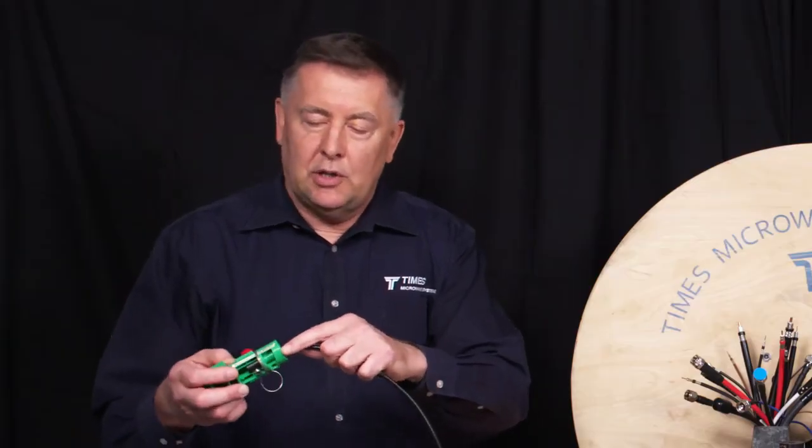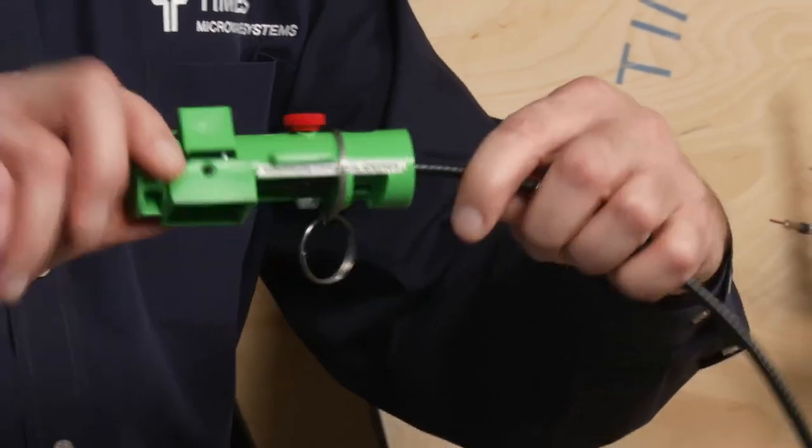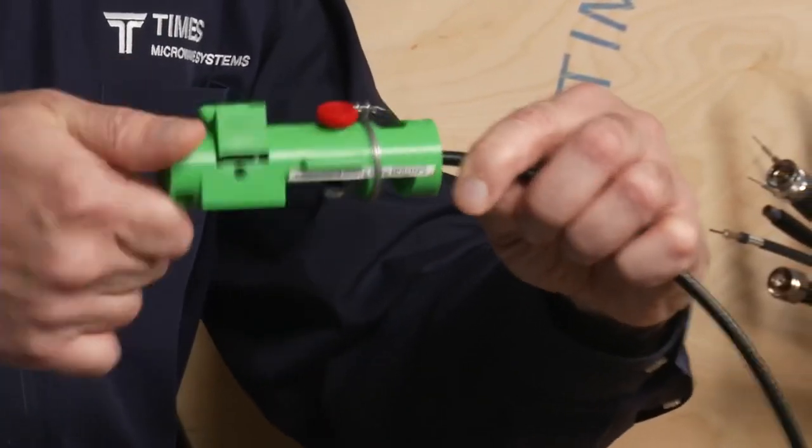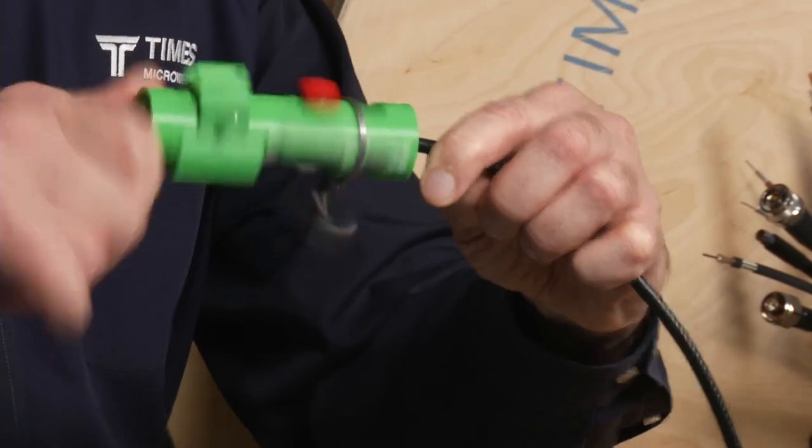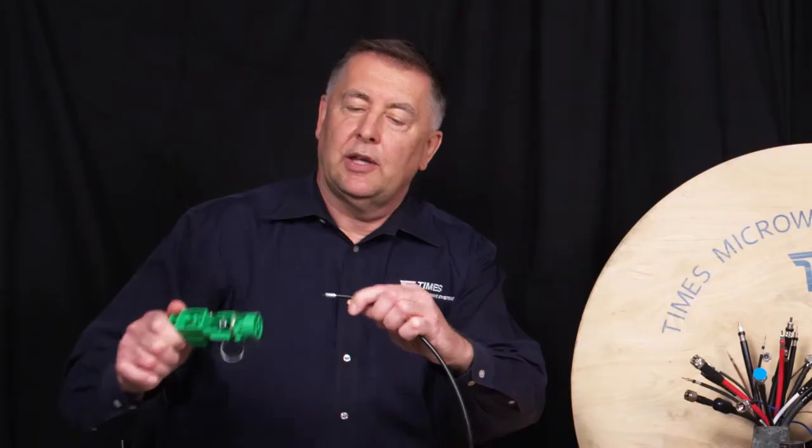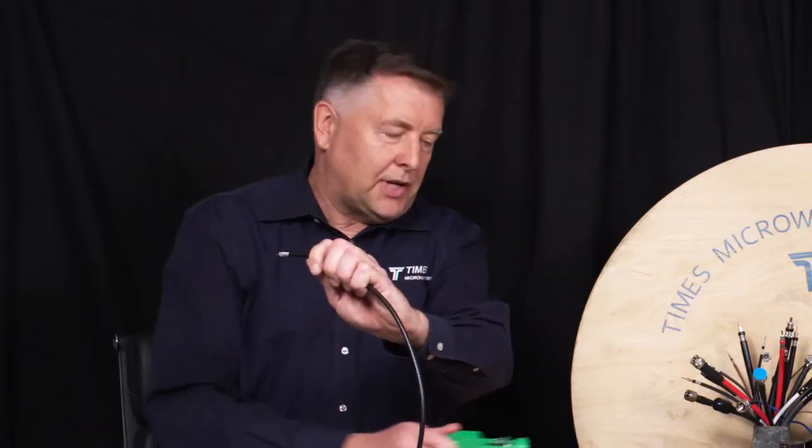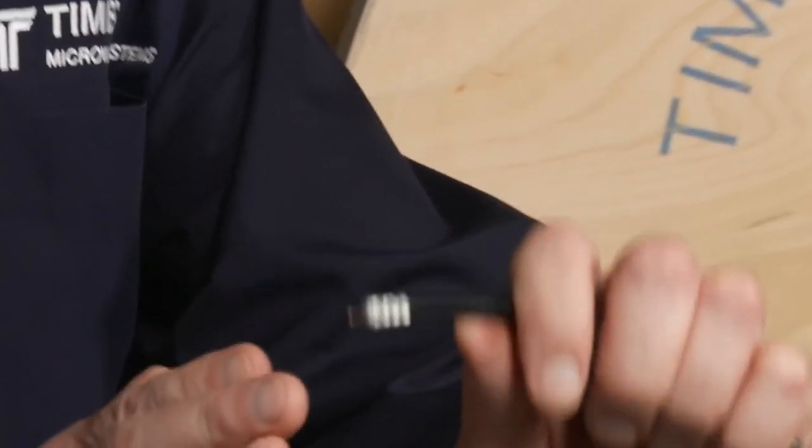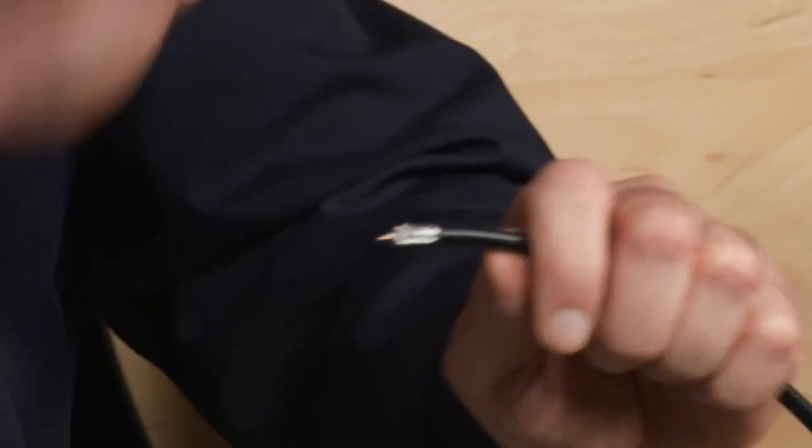This is just like an old-fashioned pencil sharpener. You just spin this tool and it's very easy to do. You'll feel it once it's done, just like that it spins freely. You're all set to go. You've taken that jacket off without damaging or touching the braid whatsoever. This process holds true for the LMR product and for the TCA product.